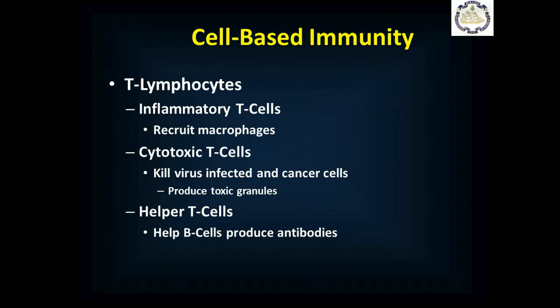T lymphocytes provide cell-based immunity. Inflammatory T cells respond to inflammation and recruit macrophages — 'big eaters' — that consume foreign invaders. Cytotoxic T cells make chemical weapons — toxic granules that kill virus-infected cells and cancer cells. Helper T cells help B cells make antibodies, which are a huge part of the immune response.